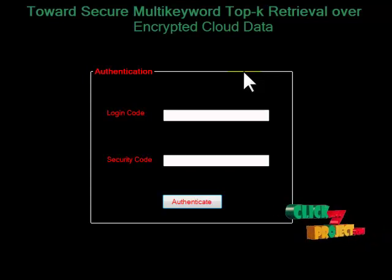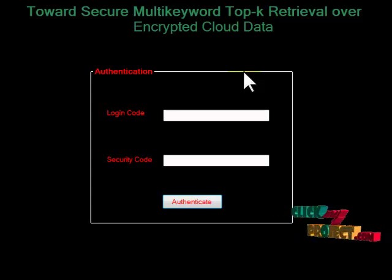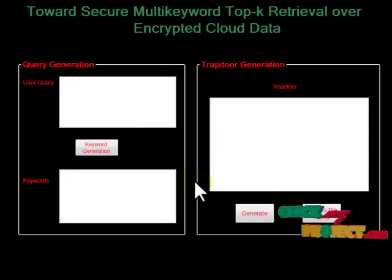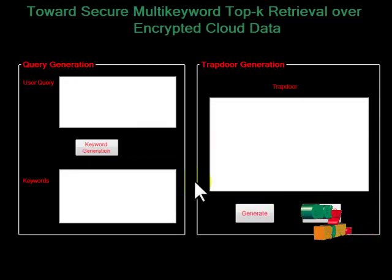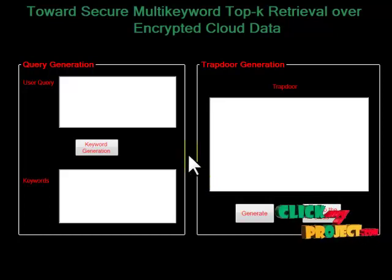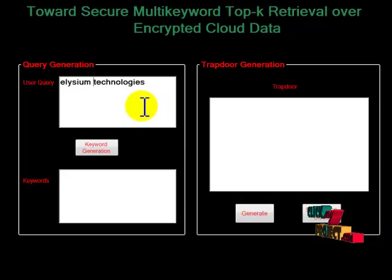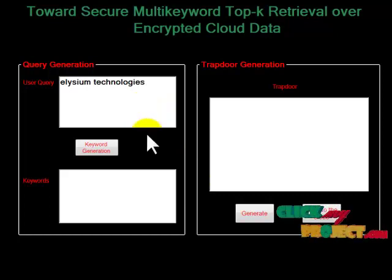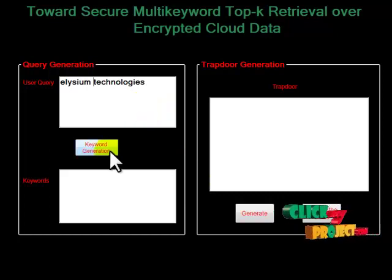The previously registered user is 'etpl'. We use this user now, entering the login credentials correctly so we can access the cloud server. The user then generates a query. We type the query here — two query keywords are entered as the user query.